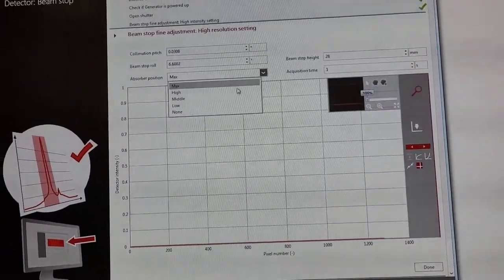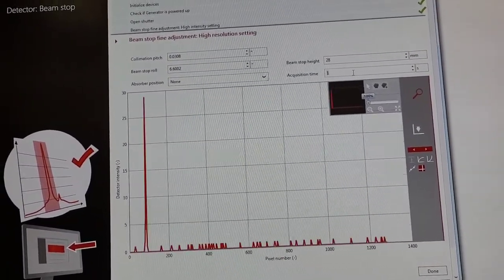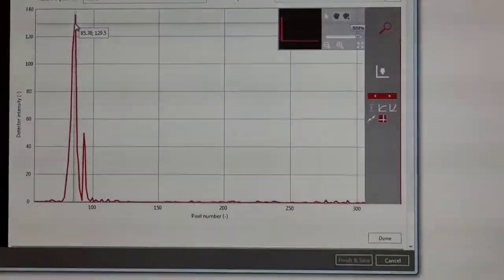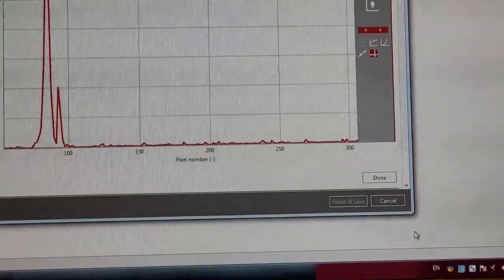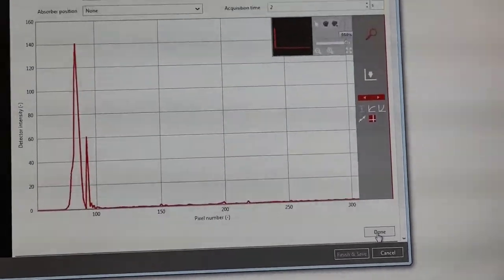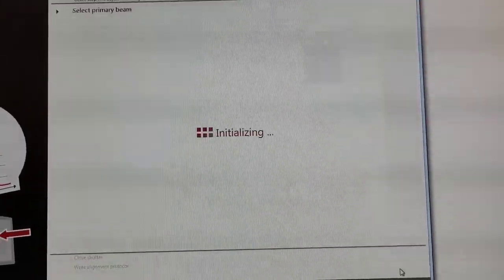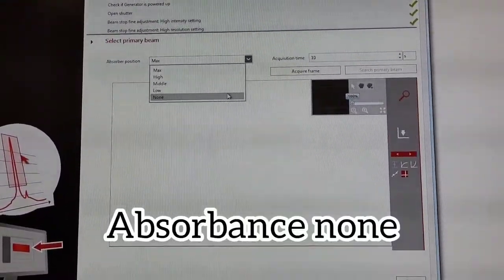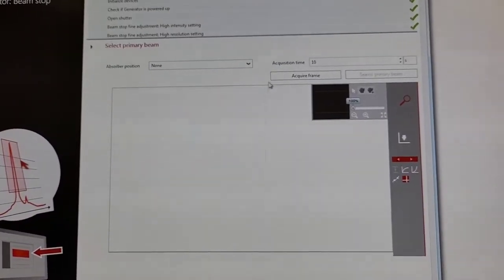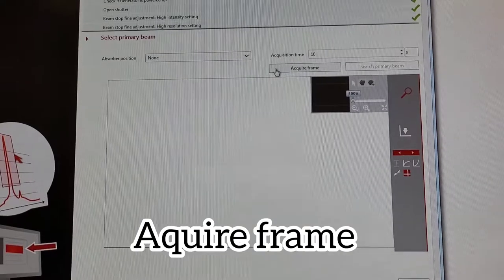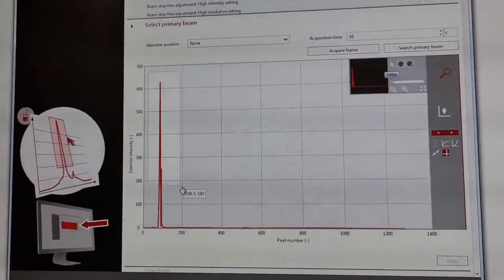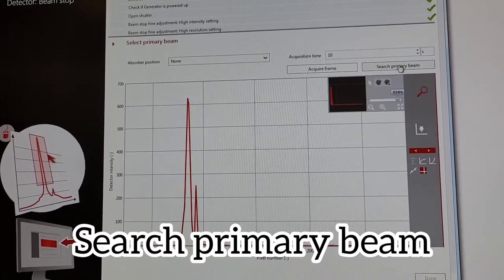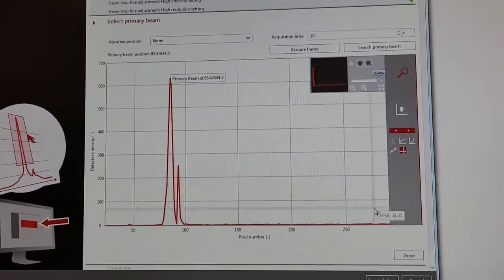The secondary beam should be about a third as high. Here I'm repeating the same thing. Absorbents at none, the acquisition time at 2 seconds, and the adjustment was about a third. Then finally you want to do this step where you search for the primary beam. And that's about it for the beam stop alignment.